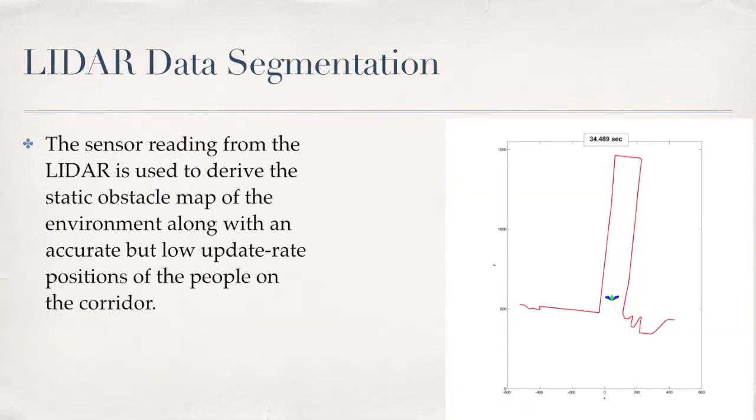The sensor readings from the LIDAR was used to derive the static obstacle map of the environment along with an accurate but a low update rate position of the people on the corridor. To separate the moving obstacles, that was the human in our case, from the static map, we compared each frame of the LIDAR with the previous, the first and the successive frame and removed any points which appeared to be very close to those reference points.